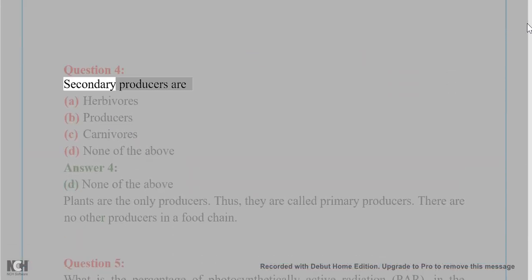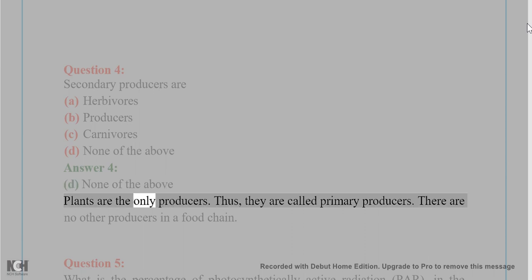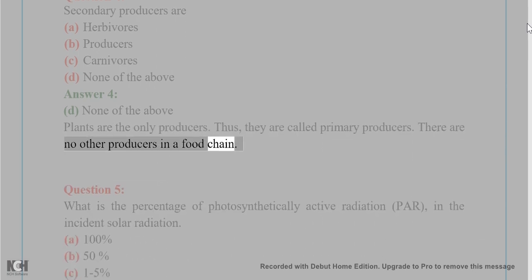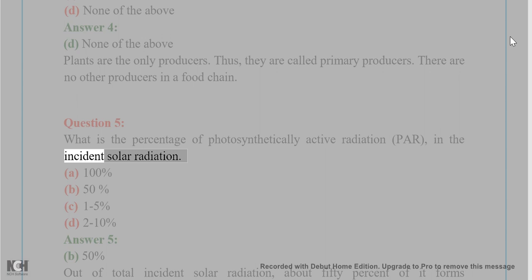Question 4: Secondary producers are (A) Herbivores, (B) Producers, (C) Carnivores, (D) None of the above. Answer 4: (D) None of the above. Plants are the only producers, thus they are called primary producers. There are no other producers in a food chain.